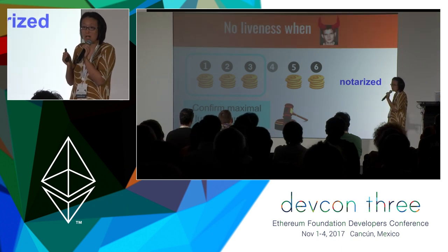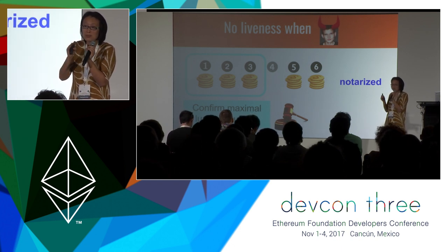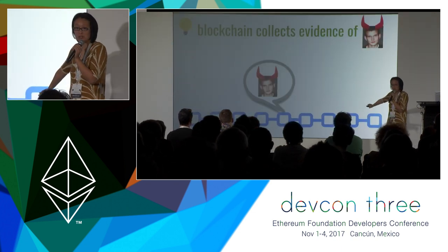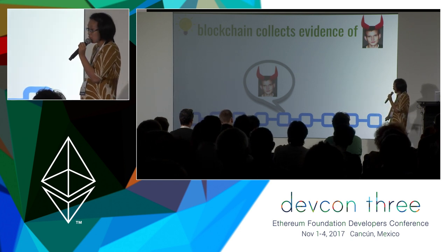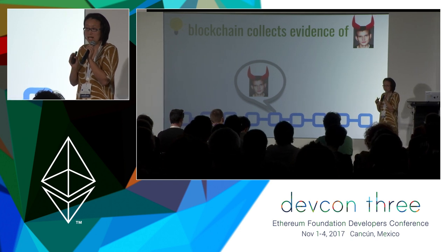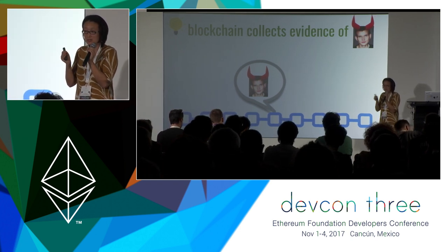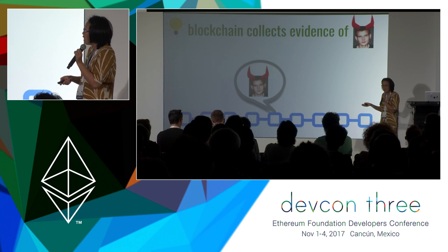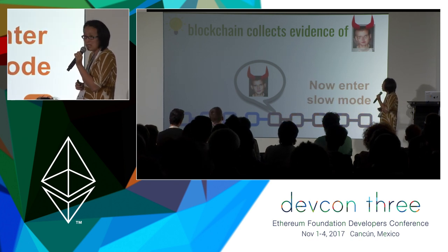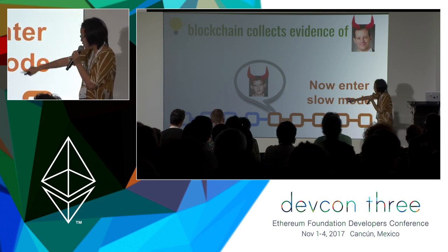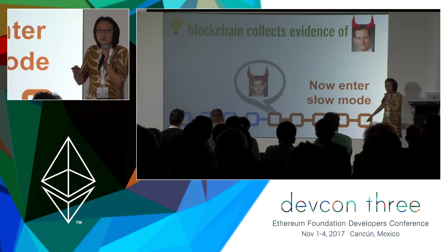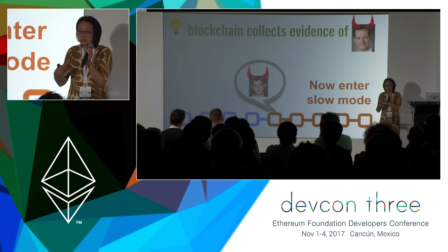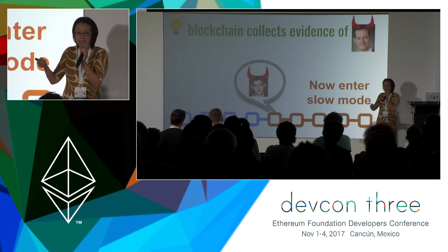I always confirm the maximal lucky sequence. The problem I'm trying to solve is: how do we get liveness when the leader is corrupt or when the committee is not online? That's where we make use of the blockchain. We haven't used the blockchain yet, and we're going to use it for two purposes: first, to collect evidence to detect when something has gone wrong — so the blockchain can tell us the fast path has failed and we should fall back; and second, once we detect failure, to enter the slow mode. And once you can reelect a new leader and committee using a smart contract, you can re-bootstrap a fast path.